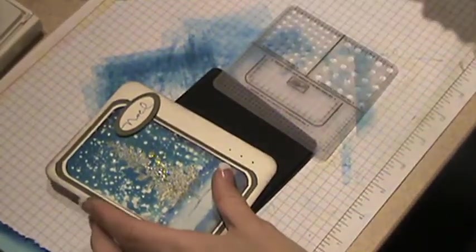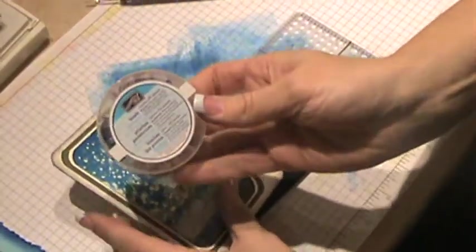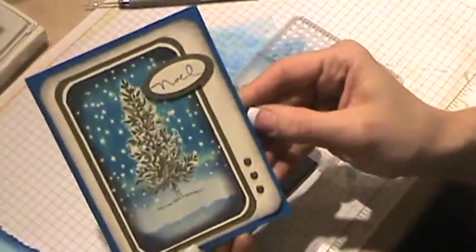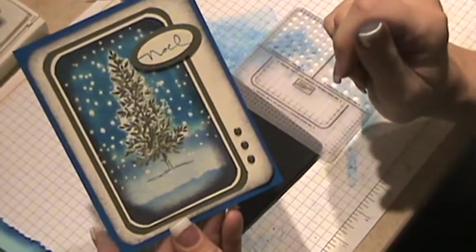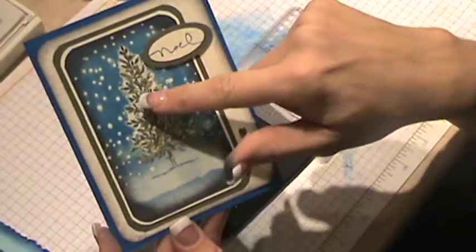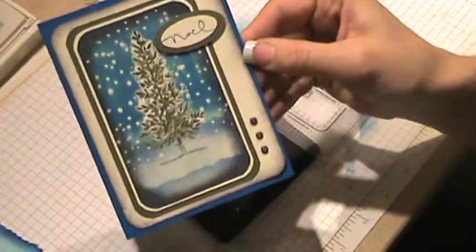And then I would take some Always Artichoke brads from the Rich Regals brads, and put those in those three holes. Attach it to the card front, and voila! You have a lovely card that looks like a wintry, snowy evening, and all because of that emboss-resist technique. The embossing powder resisted the ink that we brayed and sponged. So, have fun!